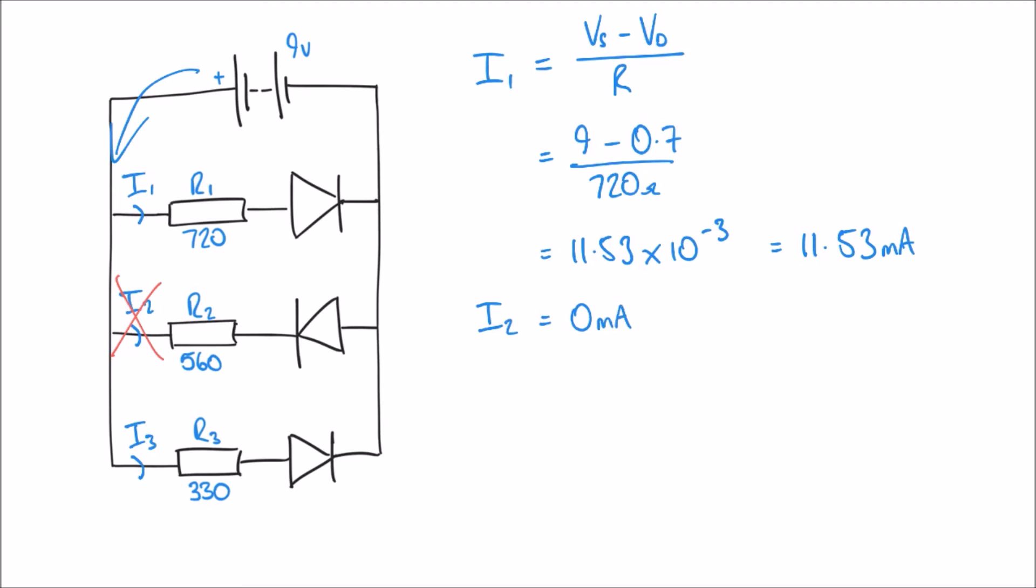Finally, let's look at I3. We can do the same thing here. I3, using Ohm's law, is going to be equal to 9 minus 0.7, which we're assuming as the voltage dropped across the diode, divided by 330. That gives me an answer of 25.15 milliamps.